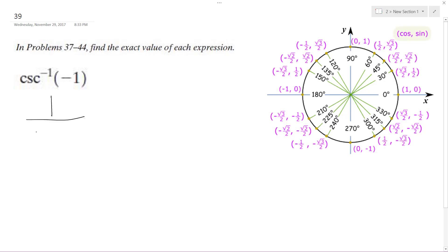1 over the sine of negative 1. So, in this case, the cosecant's bound between negative pi over 2 and pi over 2.